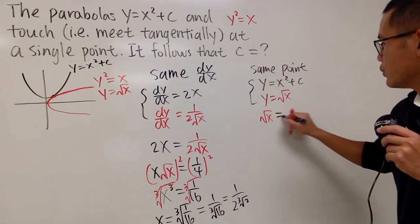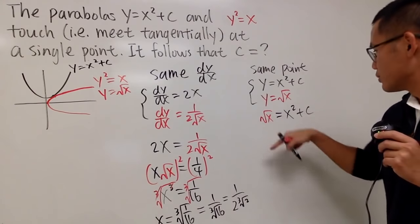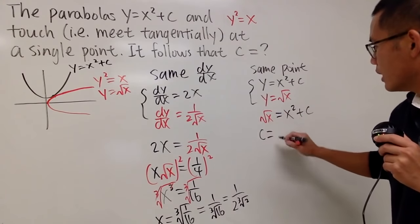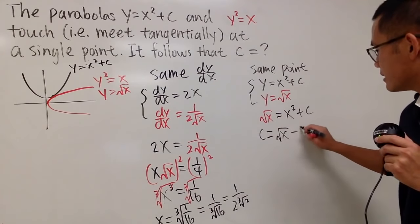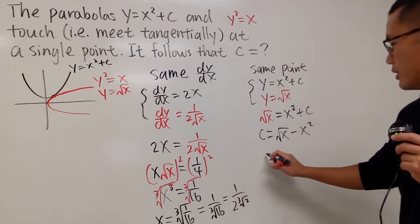So, square root of x equals x squared plus c. And of course, bring this to the other side, we can say c equals square root of x minus x squared. And we just have to plug in the x value, and that's pretty much it.